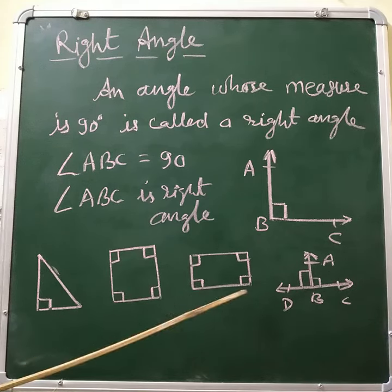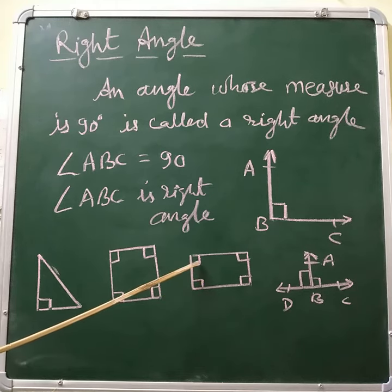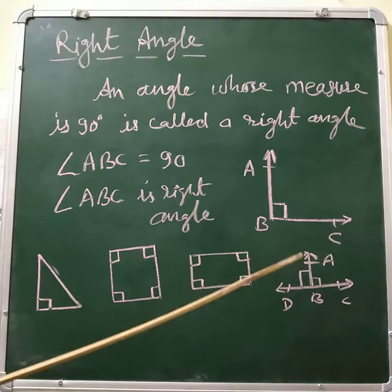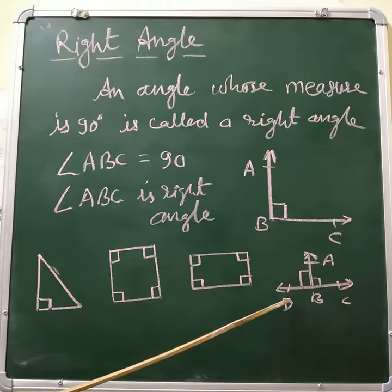In a rectangle, all the angles are 90 degrees, so in a rectangle all angles are right angles. If AB is perpendicular to CD, then the angle made is 90 degrees.